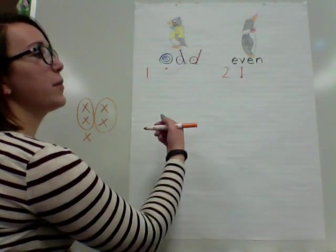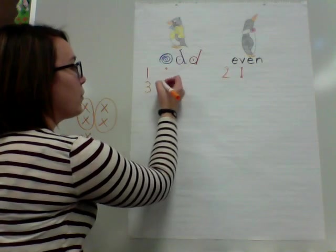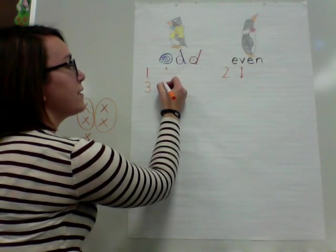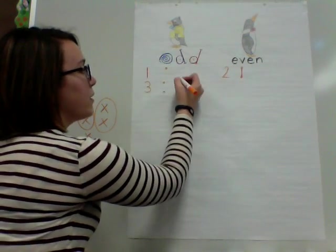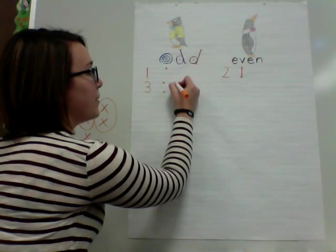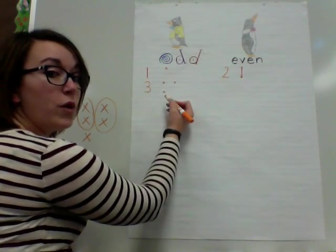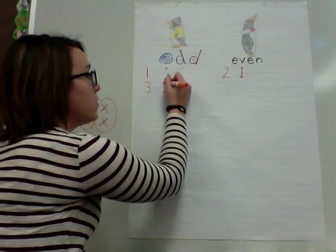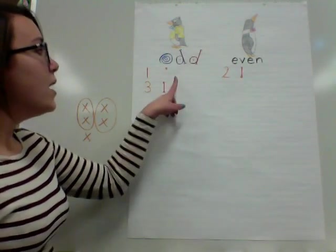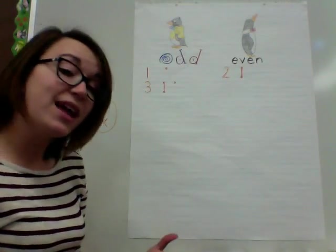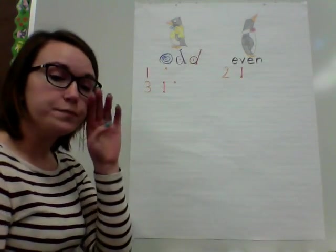So our next number would be three. We're going to draw our dots in the same way - one at the top, one at the bottom, and then one at the top again. Because we have two, we're going to go ahead and connect those - so one and two are connected, but we do have a third dot that's left over and wouldn't have a partner.